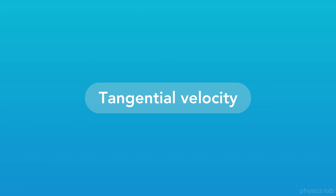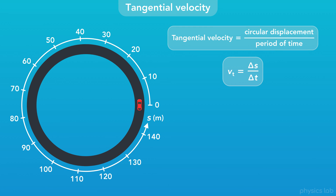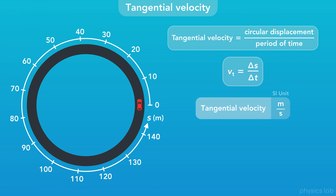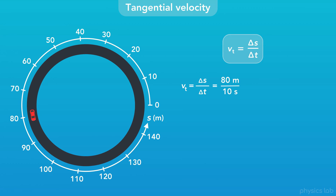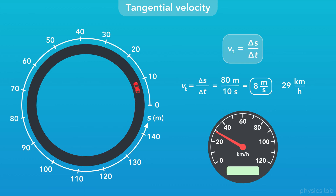Now let's talk about tangential velocity. Like linear velocity, tangential velocity is the circular displacement of an object divided by a period of time. We still use the variable v for velocity, and we use the subscript t to mean tangential. The SI unit for tangential velocity is meters per second, the same as linear velocity. As an example, if this car drove 80 meters around the track in 10 seconds, then the car's tangential velocity was 80 divided by 10 seconds, which is 8 meters per second, or about 29 kilometers per hour. The speed gauge in the car would display the car's tangential velocity.